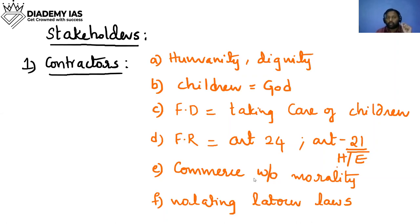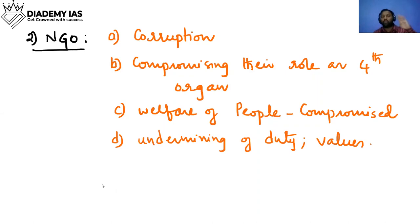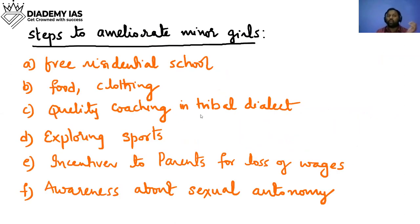Contractors are also violating labor laws — these are the ethical issues related to contractors. With respect to NGOs, they are steeped in corruption. They are expected to act for the welfare of the people but are acting for contractors, compromising their role as the fourth organ. After the 1991 reforms, NGOs became key participants in the development of the nation, yet here the welfare of the people is being compromised and they have undermined their duty and values.